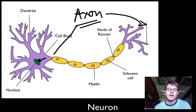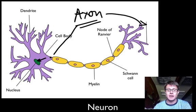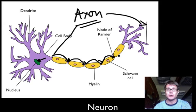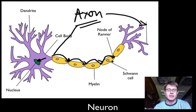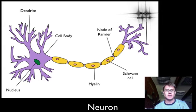We also have nodes of Ranvier — gaps between the myelin. The message doesn't travel all the way through the axon continuously; it's able to jump from spot to spot because the ion channels are concentrated at these nodes. If you think of a neuron like a wire, the myelin sheath is like insulation that wraps around the outside and speeds up the message as it travels.